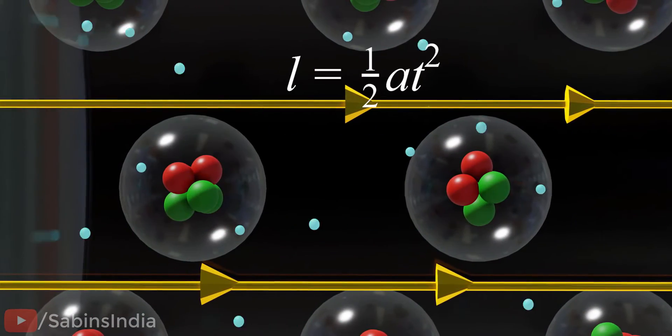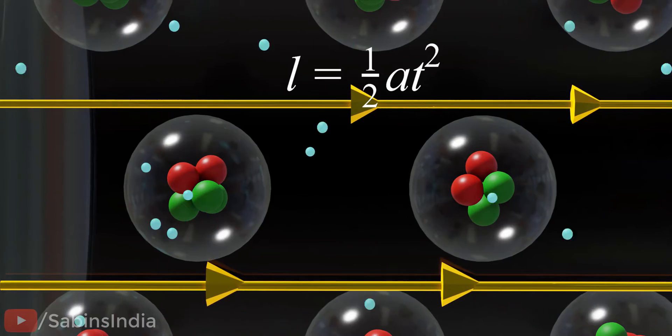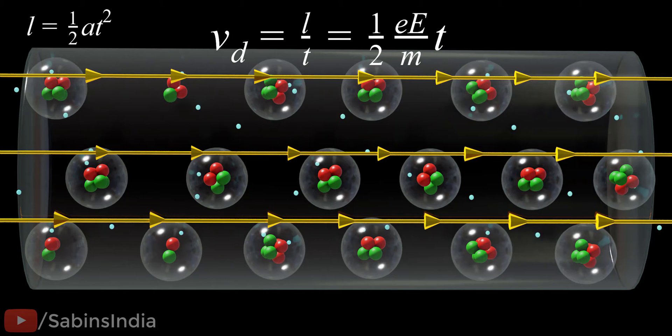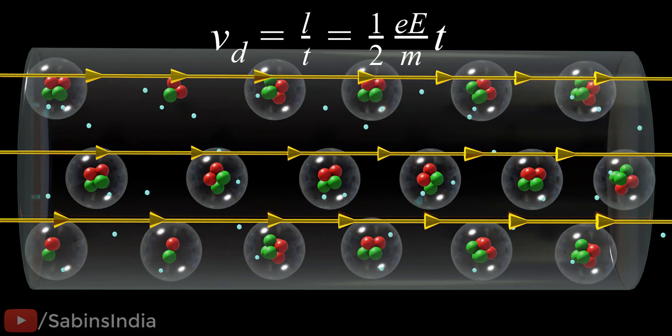The length of travel and time are connected through this equation, from which the average speed of the electron, the drift speed of the electron, can be easily derived as follows. So we have derived the drift speed of electrons.